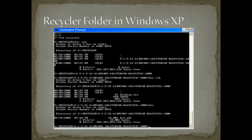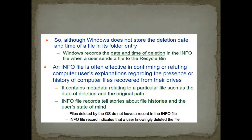The INFO file inside the SID directory maintains metadata about the deleted file — its name, size on disk, date of deletion, and its original path on the hard disk. The INFO2 file maintains details only about files deleted by the user, not files deleted by the operating system itself.